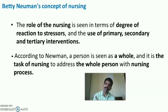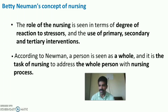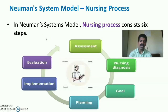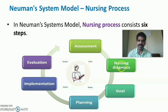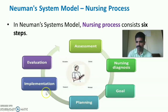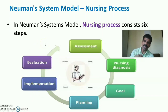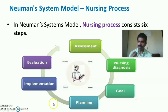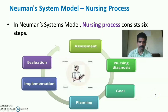According to Neuman, a person is seen as a whole system, and it is the goal of nursing to address the whole person with the nursing process. In the Neuman System Model, the nursing process consists of six steps: assessment, nursing diagnosis, goal-setting, planning (plan of action), implementation or intervention, and evaluation.